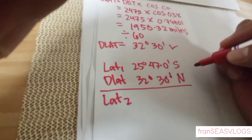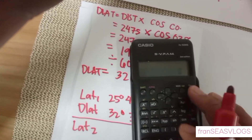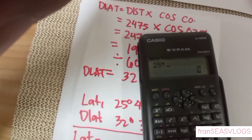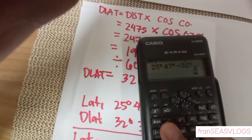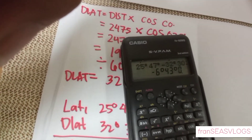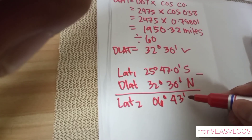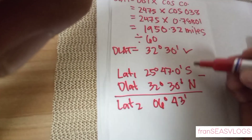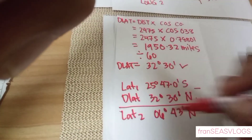Since we are looking for latitude 2, we know the rules: different name, we have to subtract; same name, we have to add. So we're gonna subtract this. So: 25 degrees 47 minutes minus 32 degrees 30 minutes. We have 6 degrees and 43 minutes. Our sign — copy the bigger value — so north. So we have latitude 2 already: 06 degrees 43 minutes north.